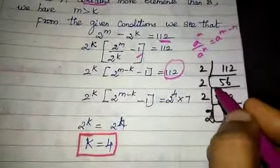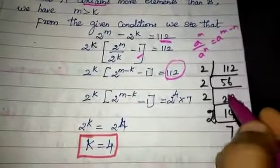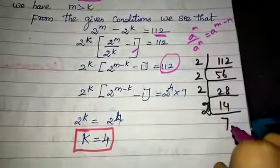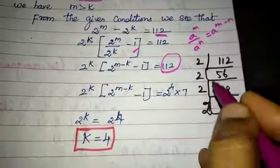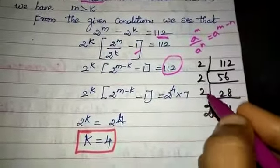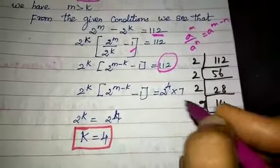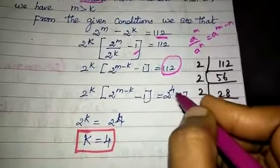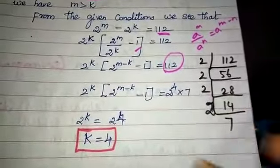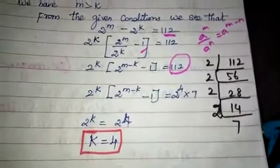Now we factorize 112. Factorization: 2 times 2 times 2 times 2 gives 2^4, which equals 16, and 112 divided by 16 is 7. So 112 equals 2^4 times 7.